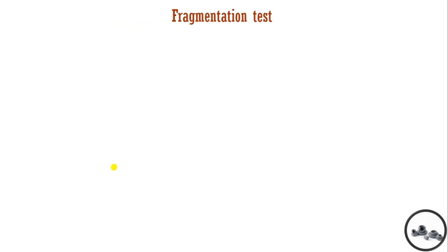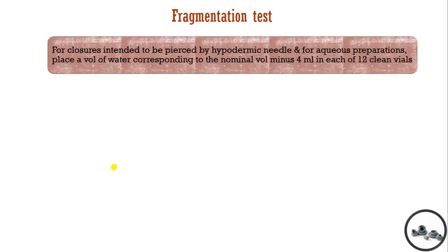Next is the functionality test. In the functionality test, we indicate the functional ability of the closure. The first test is the fragmentation test. The purpose of the fragmentation test is to check the fragmentation, or coring, of the rubber — whether fragments appear when we pierce a needle through it.